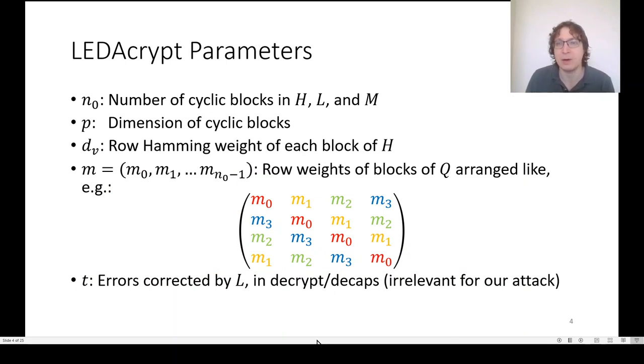Let's look at the parameters because we'll refer back to these throughout the rest of the presentation. N0 is the number of cyclic blocks in H, L, and M, which might be 2, 3, or 4. P is the dimension of the cyclic blocks. D sub B is the row Hamming weight of each block of H.